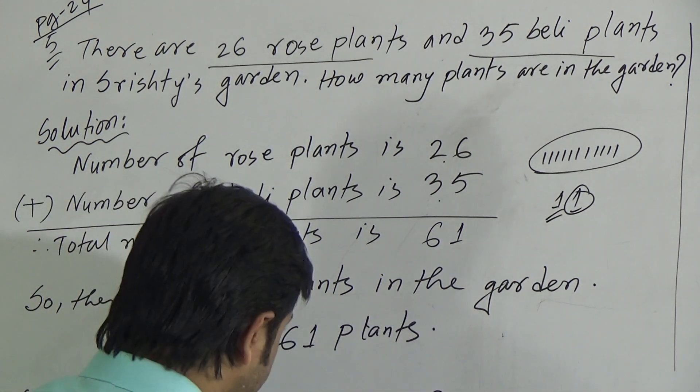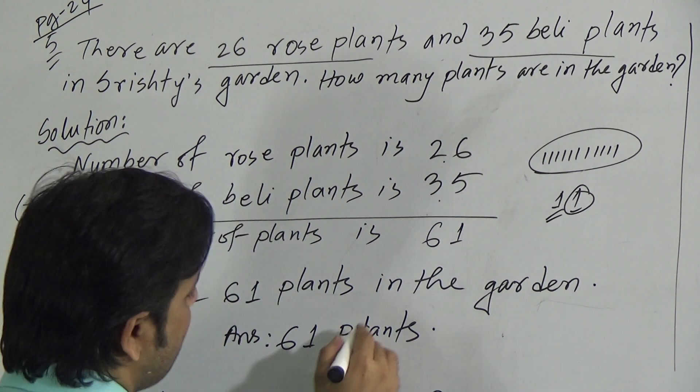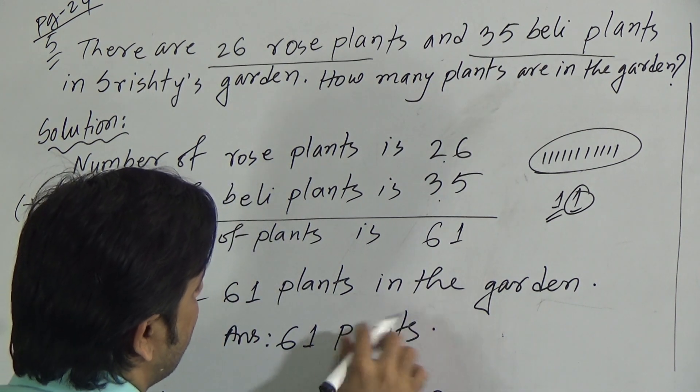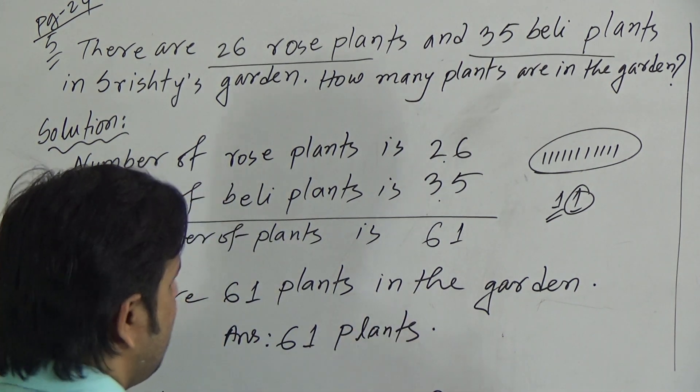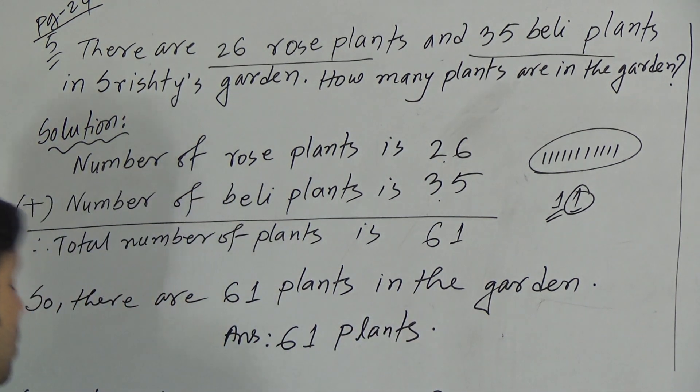So the answer of word problem 5 is 61 plants. I hope you have understood our solution of question 5.